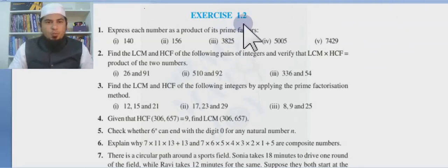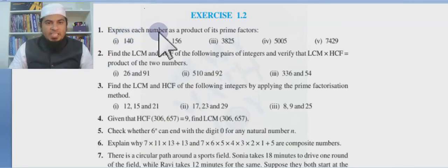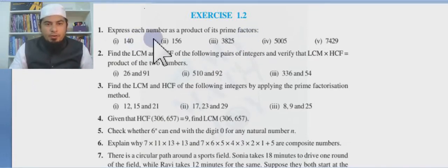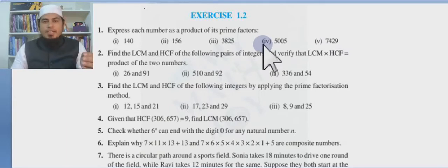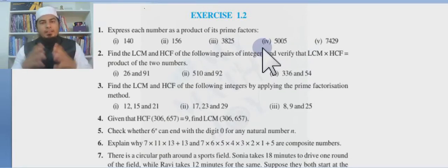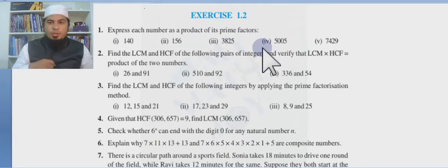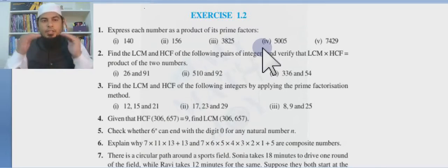Here comes Exercise 1.2. Question 1 tells us to express each number as a product of its prime factors, which means we have to do prime factorization for these numbers. We have already learned how to do prime factorization in the prerequisite — the first exercise, first video of this chapter — so I want you to do that prime factorization on your own.